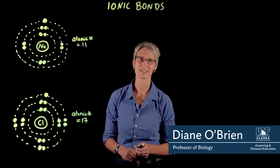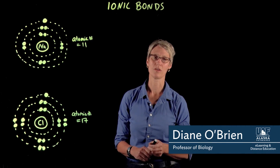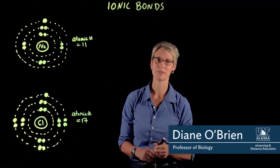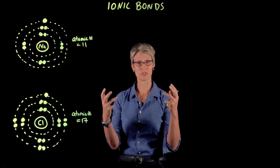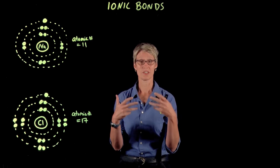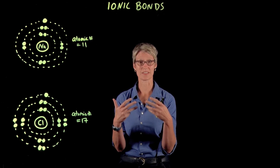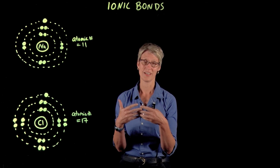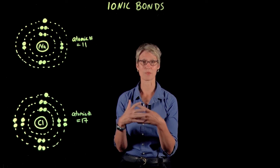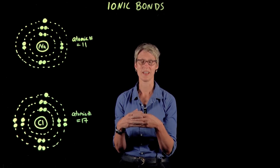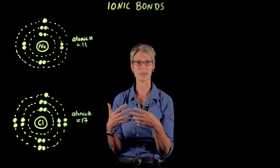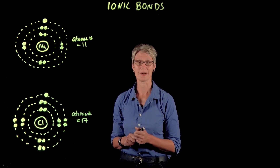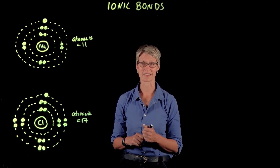Last class we spent a lot of time talking about covalent bonds. A covalent bond occurs when two atoms share electrons so that each has a full valence shell — that's a stable configuration and a strong bond. Those are the bonds that make up molecules, which we're going to be talking a lot about in the next few classes.